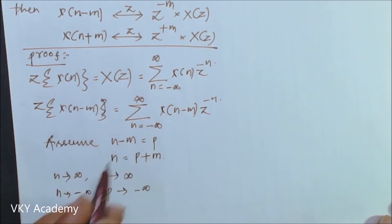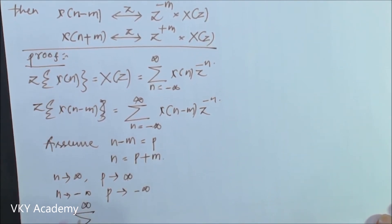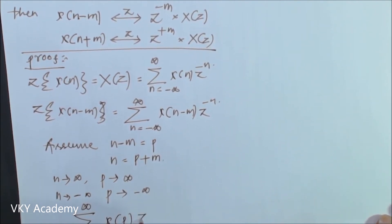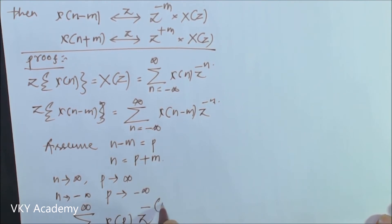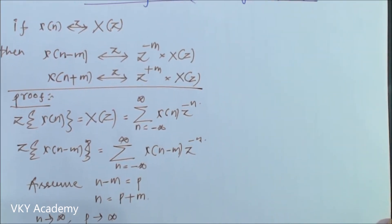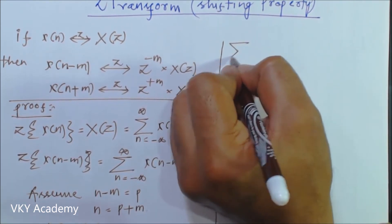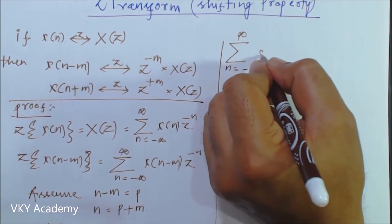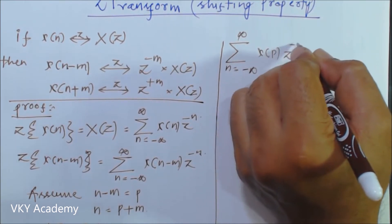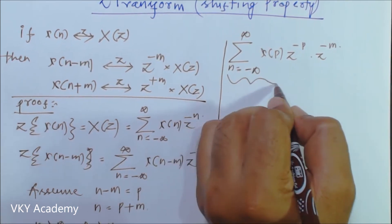So the function can be rewritten as summation p equal to minus infinity to infinity of x of p times z to the power minus of p plus m. This can again be written as summation p equal to minus infinity to infinity of x of p times z to the power minus p, dot z to the power minus m.